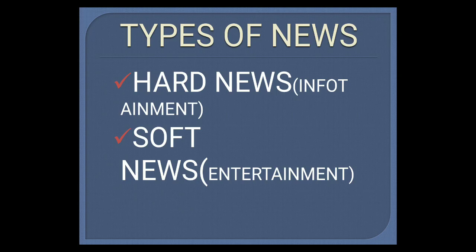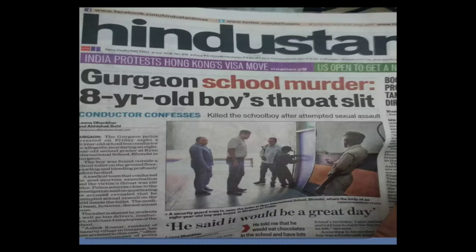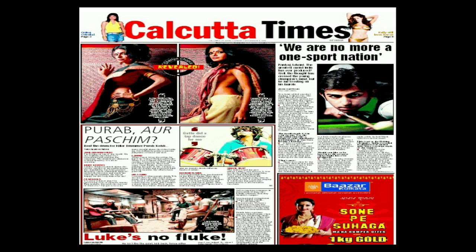There are two types of news: hard news and soft news. Hard news is infotainment — information plus entertainment for the audience. For example, anything newly introduced in the education field is called infotainment. Soft news is for entertainment — what a celebrity is doing, what a film star is doing, what baby a star has delivered. These are the two categories, infotainment and entertainment.